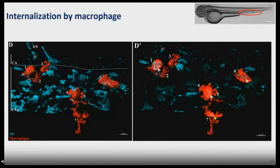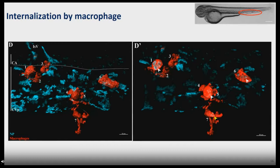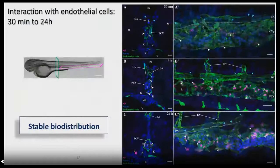We saw some phagocytes in the blood, so we looked at neutrophils first — using green fluorescent neutrophils — but we didn't see anything. Then we looked at macrophages using the mpeg1 line where macrophages are red fluorescent. In the image you can see the vein and artery, the nanoparticles in cyan, and red fluorescent macrophages. We recomposed the full 3D structure of the macrophages with Imaris and could open them up and confirm: yes, some macrophages contained nanoparticles. So within 20–30 minutes, nanoparticles are quickly internalized by both endothelial cells and macrophages.